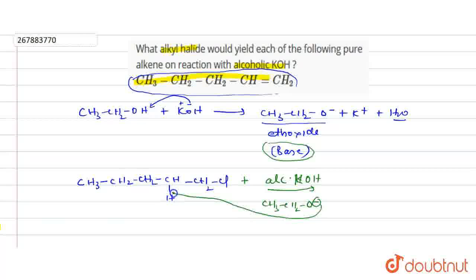So what does alcoholic KOH do? Hydrogen is abstracted from here. When it is abstracted from here, we produce CH3-CH2-CH2-CH with a proton removed, developing negative charge. And then CH2 and Cl will be present.